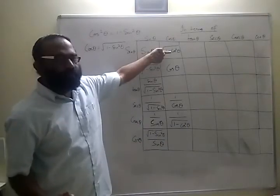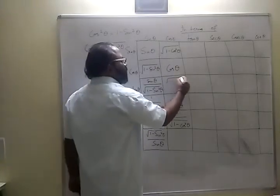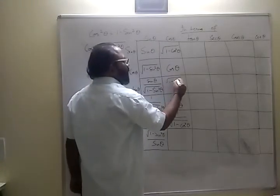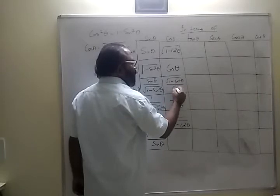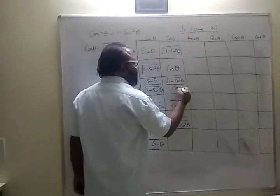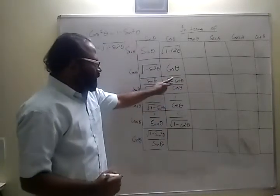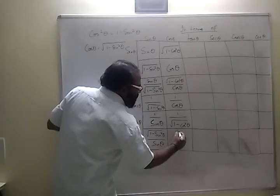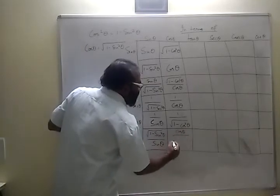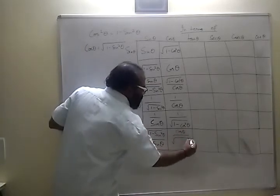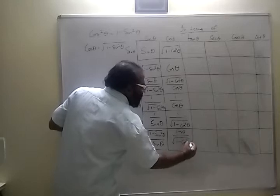Tan theta is sin theta by cos theta, so that is root of 1 minus cos squared theta by cos theta. And cot is the reciprocal of that, which would be cos theta by root of 1 minus cos squared theta.